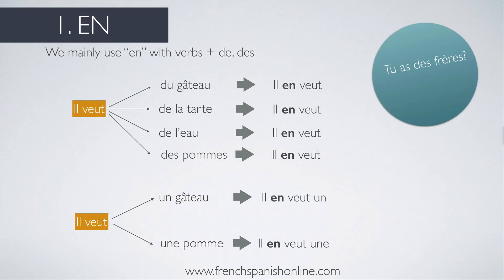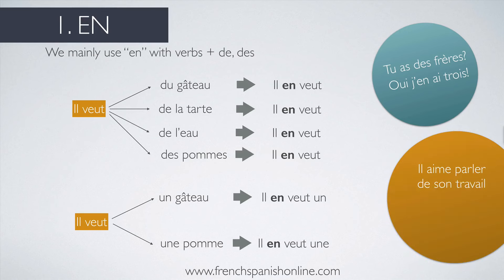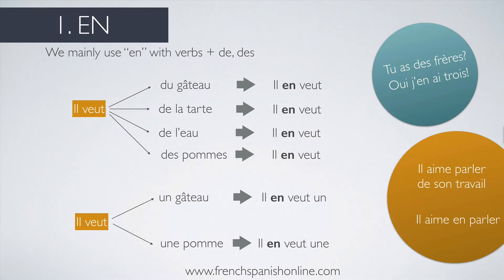For specific cases, for example: tu as des frères — if you want to say yes, you have three, four, etc., you add a number: oui, j'en ai trois. EN replaces frère and you add trois at the end. Another example: il aime parler de son travail. Because you have DE here, you can use EN — il aime en parler. Il aime parler de son travail becomes il aime en parler.